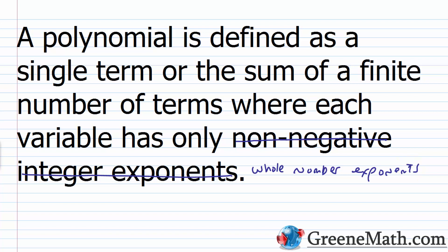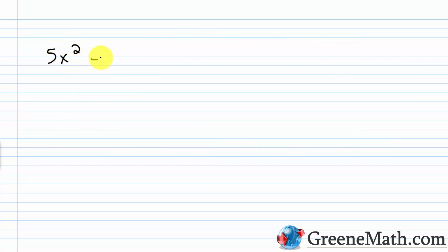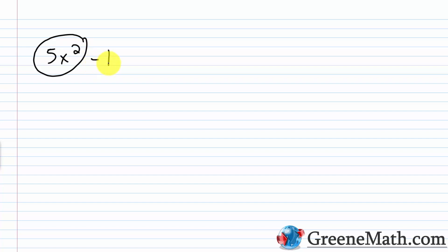Let's look at some examples. If I saw 5x squared minus 1, would this be a polynomial? Yes, it would. The variable part is x squared, and the exponent is 2 — that's a whole number exponent. You don't need to worry about a constant term like the minus 1. You only need to make sure the variables have whole number exponents.